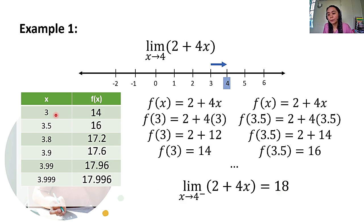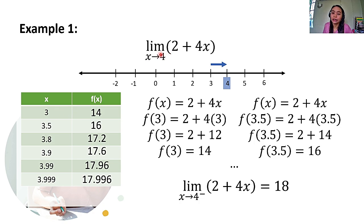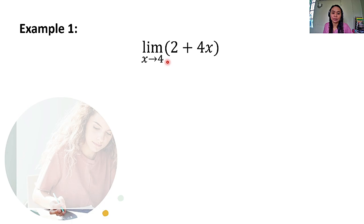Kapag from the left yung consider nating x values, lalagyan natin ng exponent na negative sign yung constant. Ibig sabihin, from the left yung consider natin. So, the limit of 2 plus 4x as x approaches 4 from the left is 18. Habang lumalapit ang x values natin sa 4 from the left, yung function values naman natin ay papalapit sa 18. Remember, itong constant natin, hindi kailangan na nasa domain ng ating function, kasi we're only after the x values na nagpapunta dyan sa constant natin.